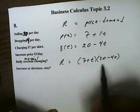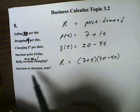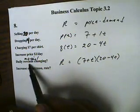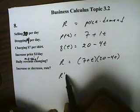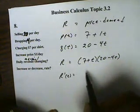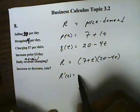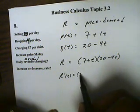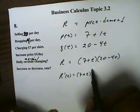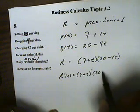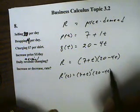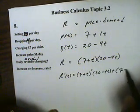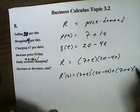Okay, this is our revenue function, price times the demand. Now we want the marginal revenue which will be the derivative function. Well, this is a product so we'll use the product rule. So 7 plus t, the derivative here, times 20 minus 4t, then plus 7 plus t again but times the derivative of 20 minus 4t.